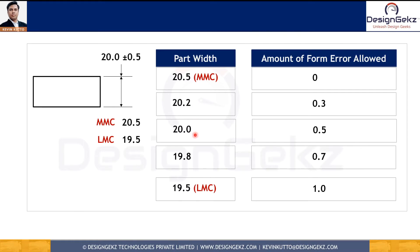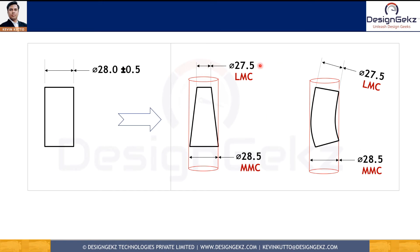Similarly, if the local size further reduces to 20, we allow 0.5 error — that is 20.5 minus 20. If the part is produced at LMC, that means 19.5, we have the maximum amount of error defined by the size tolerance. Here is a visual representation: 28.5 is the maximum material condition. When the local size is 28.5, we cannot go outside the MMC boundary — zero form error is allowed. When the part is produced at a local size of 27.5, a maximum of 1 mm form error is allowed — 28.5 minus 27.5 equals 1 mm.